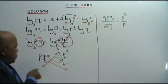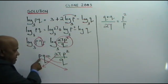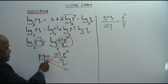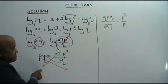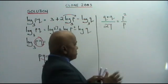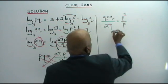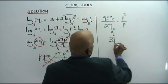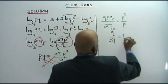If you follow the arrows properly: P comes down, Q goes up, 27 comes down. So you get Q squared over 27 equals to P — after cancellation.